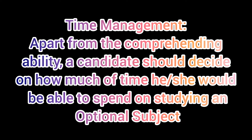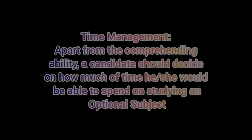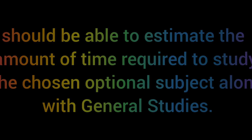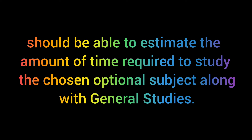Number 5 and the last is time management. Apart from the comprehending ability, a candidate should decide how much time he or she would be able to spend on studying an optional subject. A few candidates might be working while preparing or studying at the university, and should be able to estimate the amount of time required to study the chosen optional subject along with general studies.